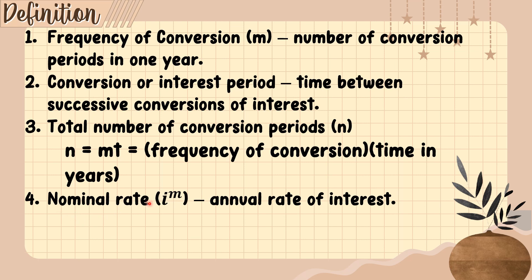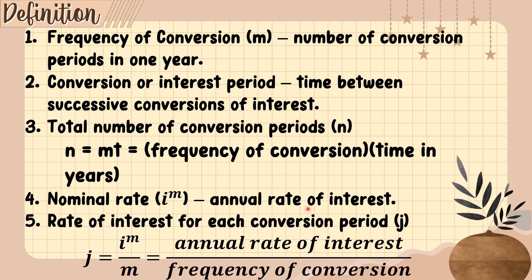The fourth term is nominal rate, symbol I raised to M, which is the annual rate of interest. The fifth term is the rate of interest for each conversion period, symbol J. The formula for J is: J equals I sub M (nominal rate) divided by M (frequency of conversion).